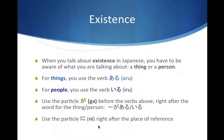For each example that follows, the first version is written in kanji, using as many kanji as possible. If you cannot yet read kanji, there's also a hiragana-only version. And if you cannot read hiragana, there's a romaji version.